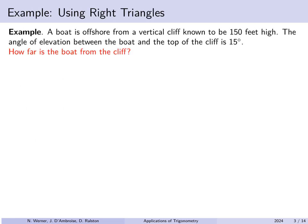For example, a boat is offshore from a vertical cliff. The cliff is known to be 150 feet high. The angle of elevation between the boat and the top of the cliff is 15 degrees. How far is the boat from the cliff? This is a fairly practical example — a map might note that a given cliff is 150 feet high, and you can measure this angle of elevation from your boat.